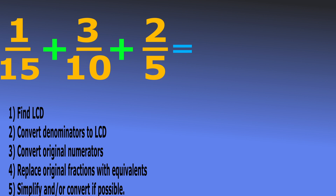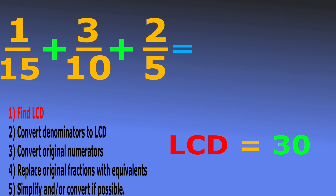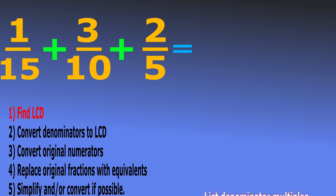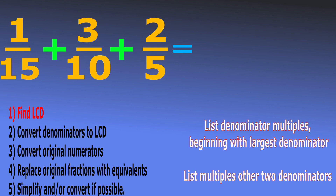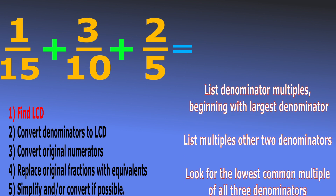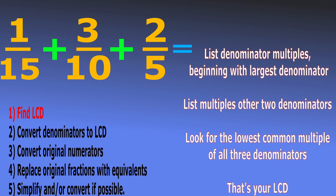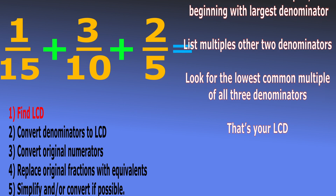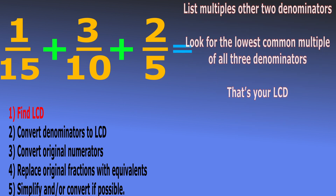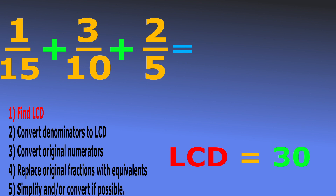Step 1: find the lowest common denominator of 15, 10, and 5. I want you to try to find this yourselves — list the multiples of each denominator starting with the largest first, write out about four or five multiples, then list the multiples of the other two smaller denominators. If you do this correctly, you'll find the lowest common denominator of 15, 10, and 5 is 30.